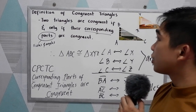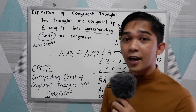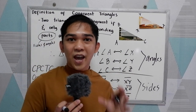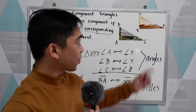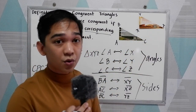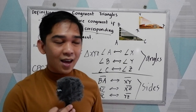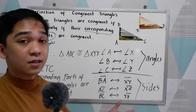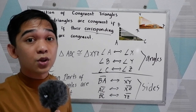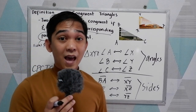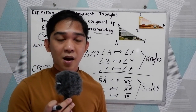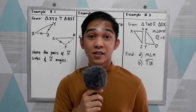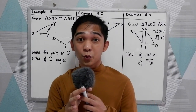Again, in order for you to check or determine whether two triangles are congruent, you need to test their parts — their angles — and decide whether they correspond to each other. Now let's have a series of examples.